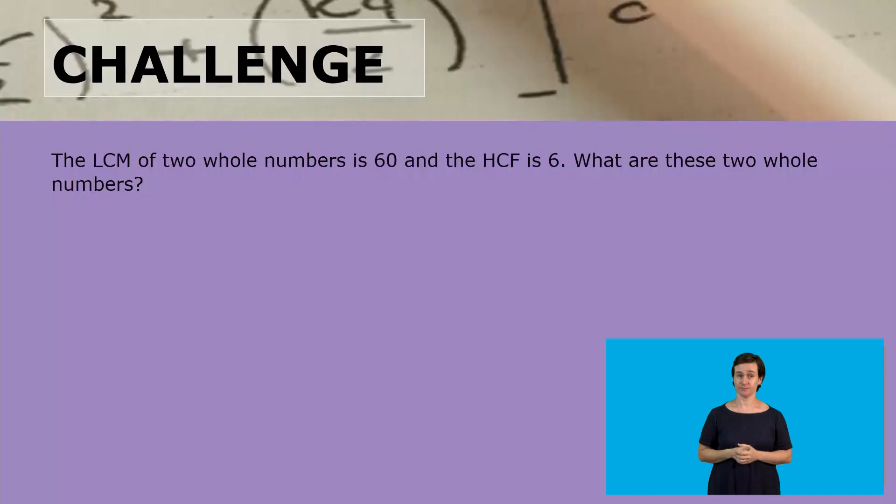Let's end our lesson with a challenge. The lowest common multiple of two whole numbers is 60, and the highest common factor is 6. What are these two whole numbers? You've been given the answers; you need to find those two whole numbers.